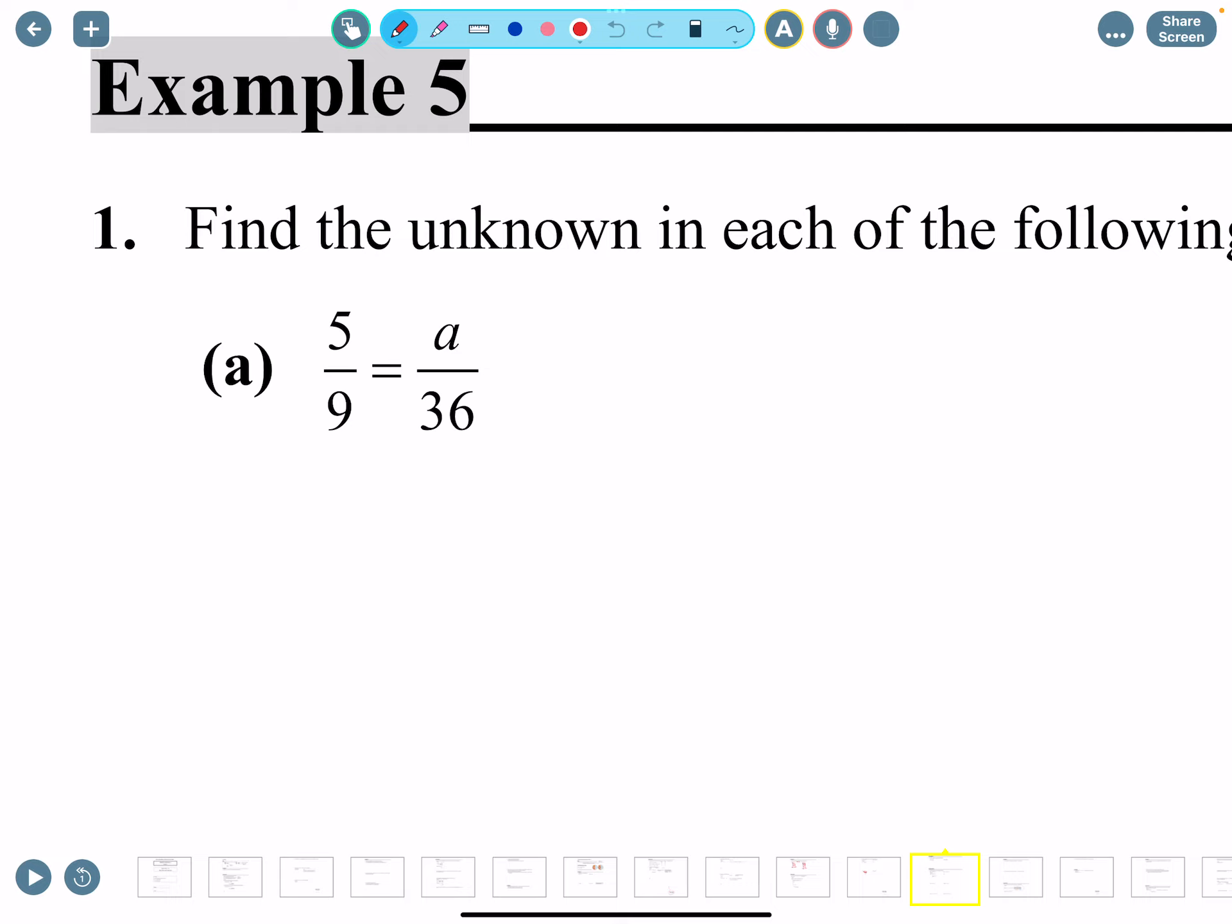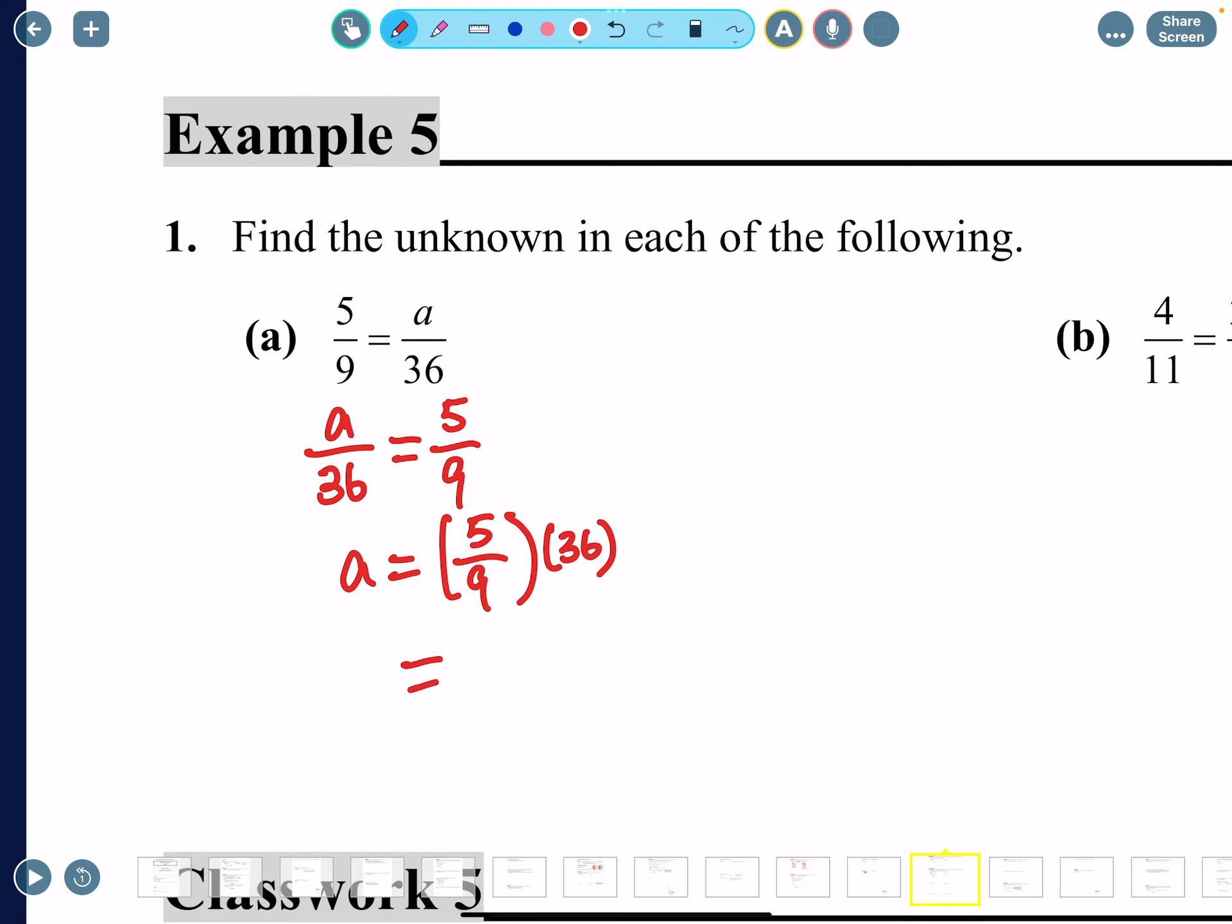Basically now I want a to be on the left every time. So in order to have a on the left we're going to swap the fractions left and right. Just swap them, don't change anything, just swap them like this. So now it's on the right. All you have to do is just move 36 to the right. So how is 36 going to move? It's currently divided from a, so on the right side 36 times. And put this on the calculator, you have 5 times 36 divided by 9, or 5 divided by 9 times 36, same thing.